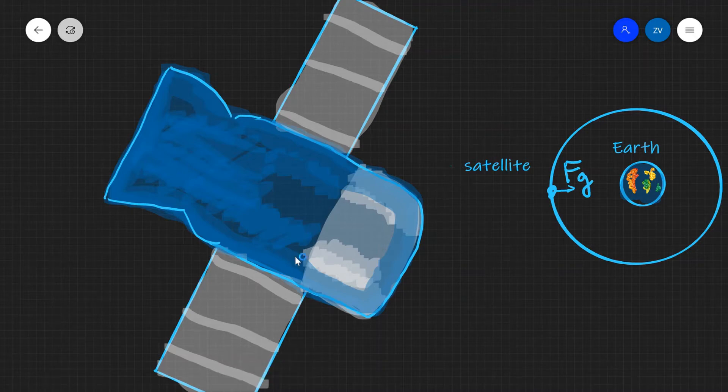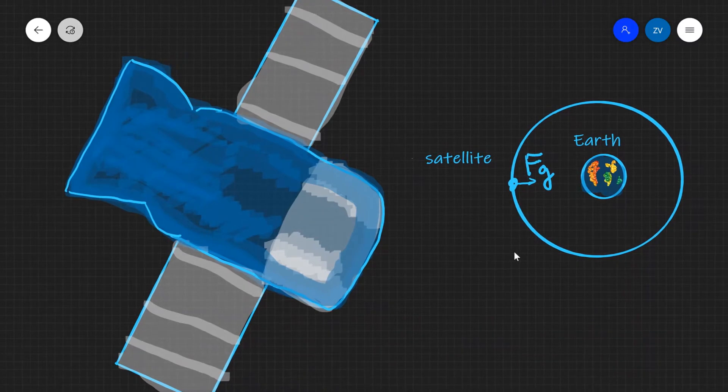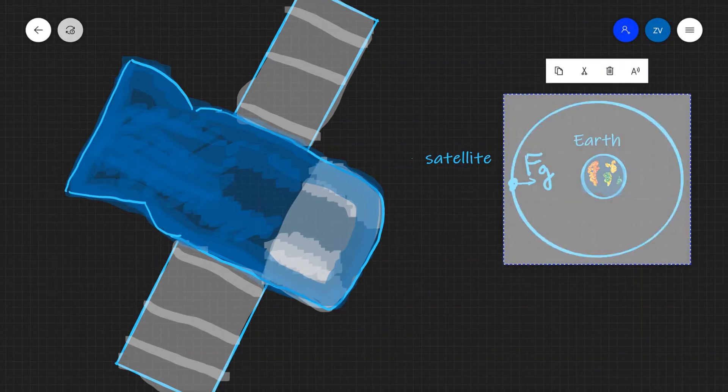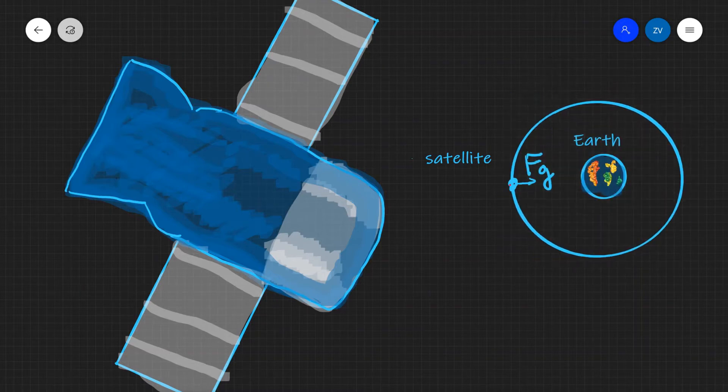You have my artistic impression of a satellite over here and additionally we have a little diagram. Here is the earth and here's a satellite going around it in a circular orbit. Let's say that the satellite is going in the counterclockwise direction. That means that at this instant the velocity vector will be pointing straight downwards.